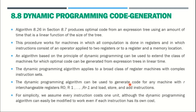This procedure works for machines in which all computations are done in register memory only. Optimal code generation for expression trees is best suited for machines where computations are done in register memory only. However, when implementing target code using dynamic programming, optimal code generation is not suitable, so we must modify some features of the algorithm.